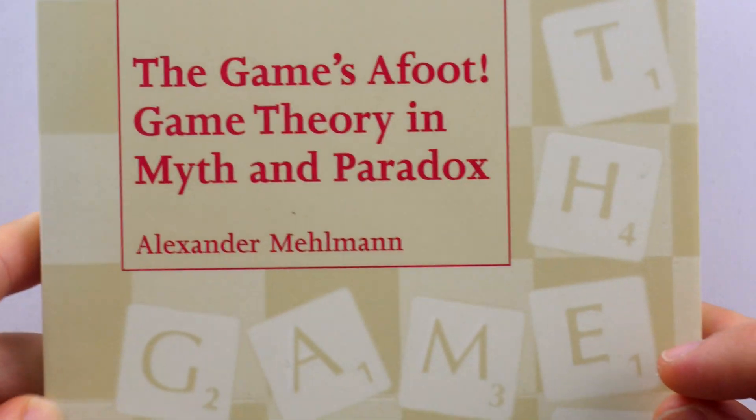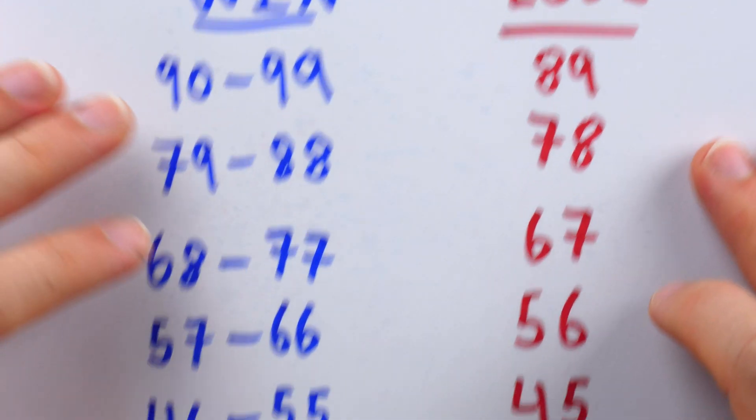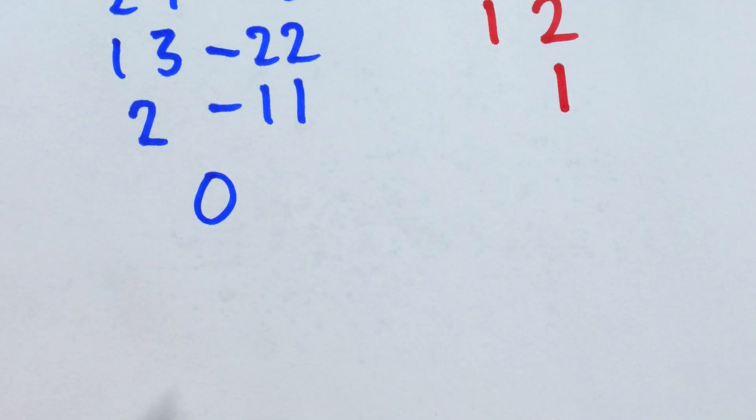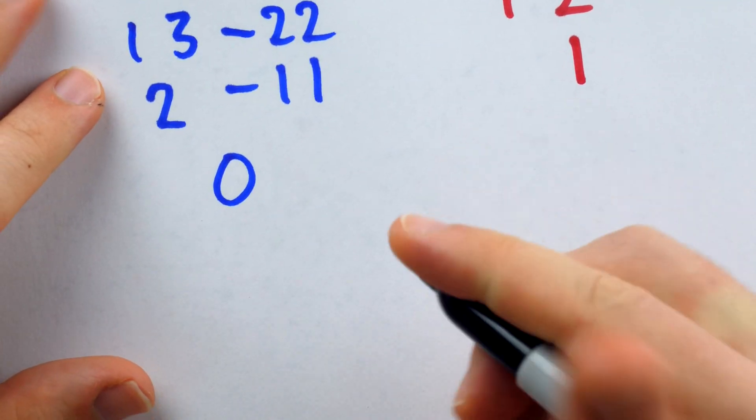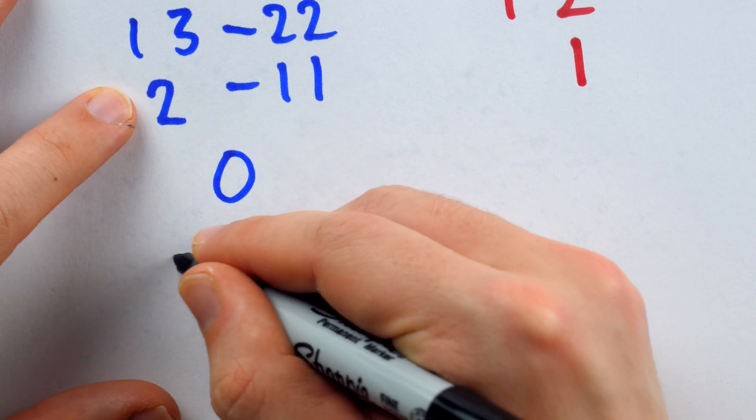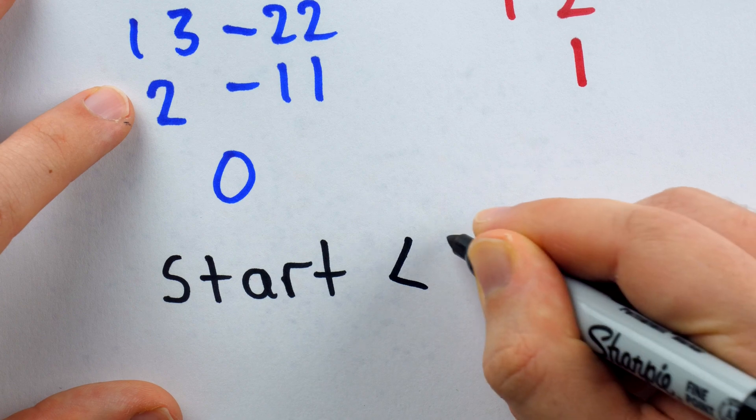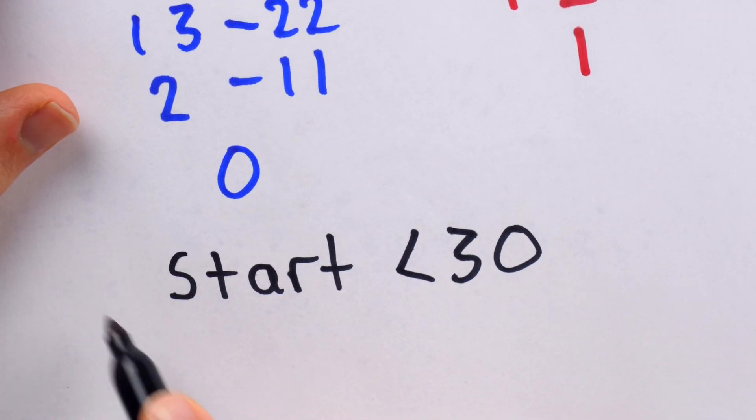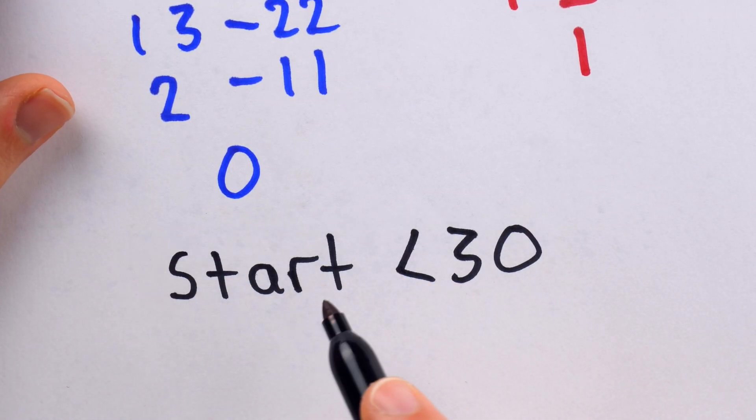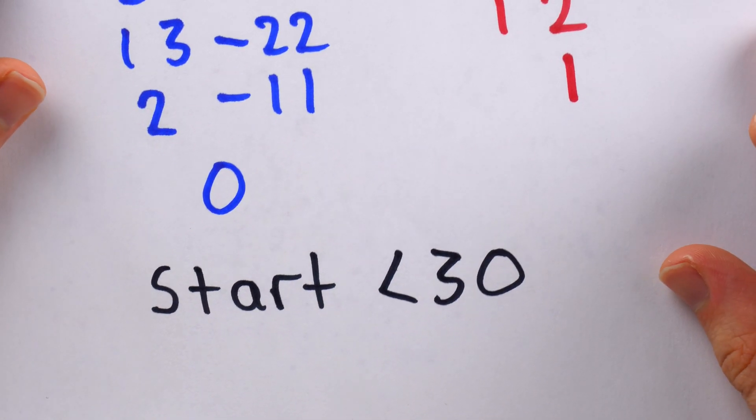I first read about this simple little game in this book from the Student Mathematical Library series from the AMS. But another source I saw talk about this game mentioned a slight variation. They just said that this was how the game worked, which is that instead of the subtotal being zero at the start, the players could actually choose to start with any number less than 30. In this case, of course, whether the first player has the advantage or not depends purely on what the starting number of choice is.